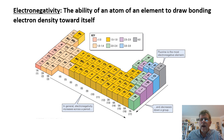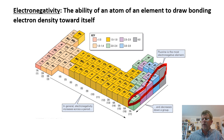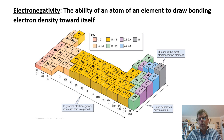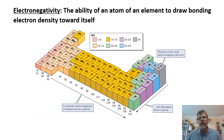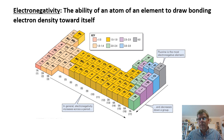Notice the noble gases are not shown on this electronegativity chart. The noble gases have their noble gas configuration already, and it's very rare to get a covalent bond between a noble gas atom and another nonmetal. Since noble gases do not participate in covalent bonding, their electronegativity value is of no consequence to us.